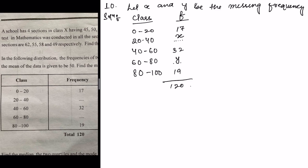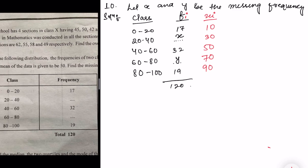Now let me add a column for xi — the midpoint of each class. For 0–20, the midpoint is 10. For 20–40, it is 30. For 40–60, it is 50. For 60–80, it is 70. For 80–100, it is 90.